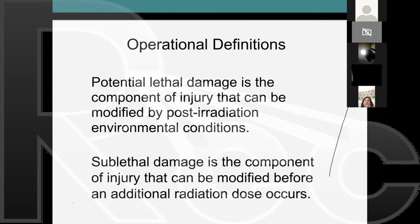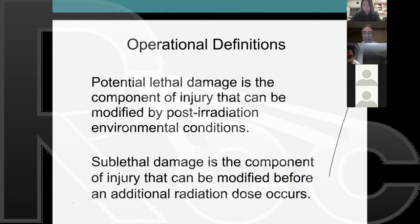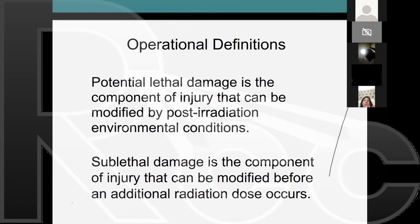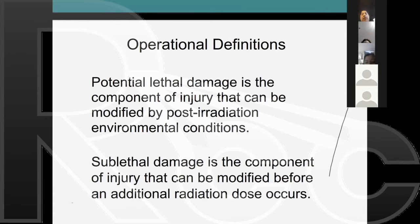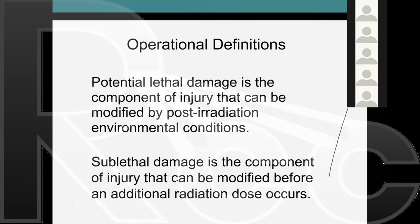Sublethal damage occurs between two doses of radiation. The closer together two doses of radiation are given, the more damage occurs. If you separate two doses of radiation in time, you get more repair and more survival. Sublethal damage is very important to conventional fractionated radiation—where you give a dose every day, you expect normal tissue to repair between fractions, while radiation damage accumulates in the tumor.